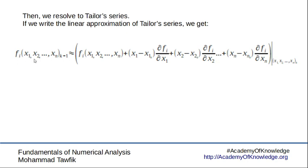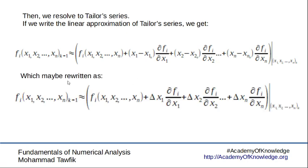The function at any set of variables x1, x2, ... xn is represented by the same function at the previous guess plus some terms. These terms are the derivative of the function with respect to each variable multiplied by the change in that variable. We can replace x1(k+1) - x1(k) by delta x's and rewrite the relation.